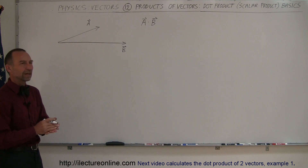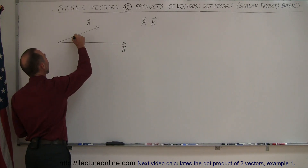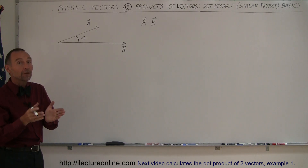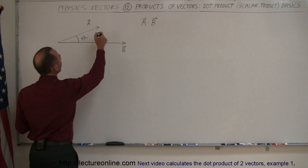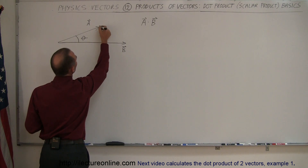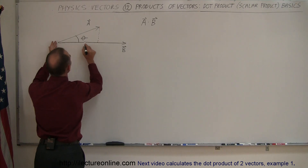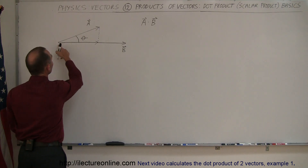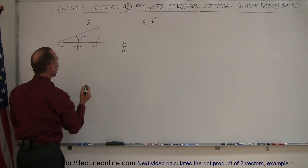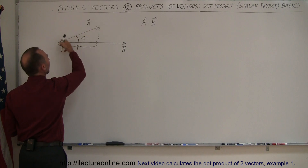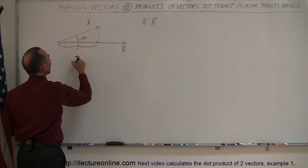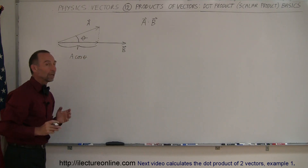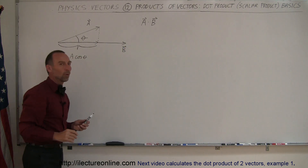What is the definition of the product of two vectors? First of all we need to know the angle between the two vectors — let's call it theta. What we're going to do is project the first vector onto the second vector. To do that we draw a line perpendicular to vector B to the tip of vector A. This distance from there to there is A projected on B, and its magnitude is the vector A — the hypotenuse of this triangle — times the cosine of theta. So this magnitude is A times the cosine of theta.